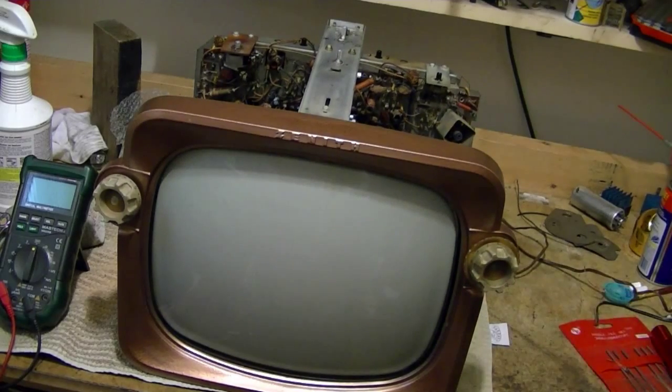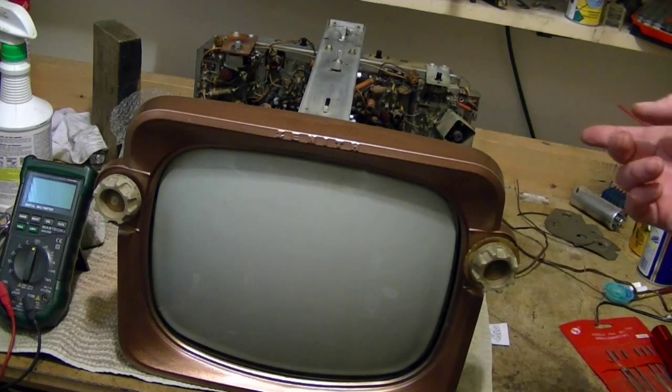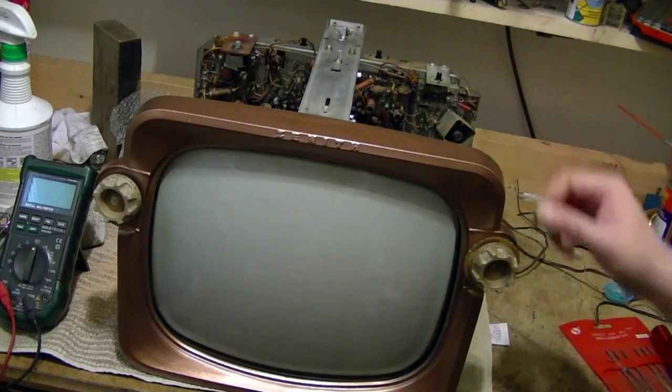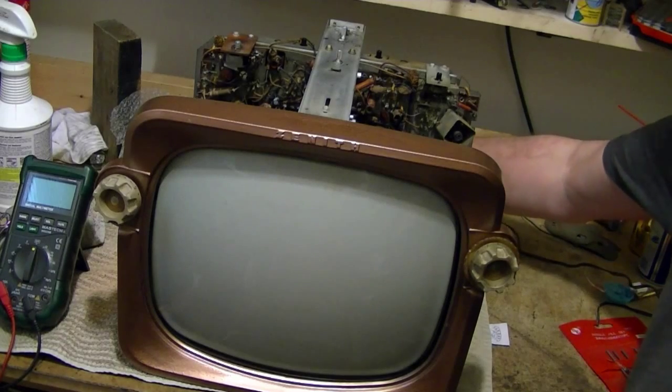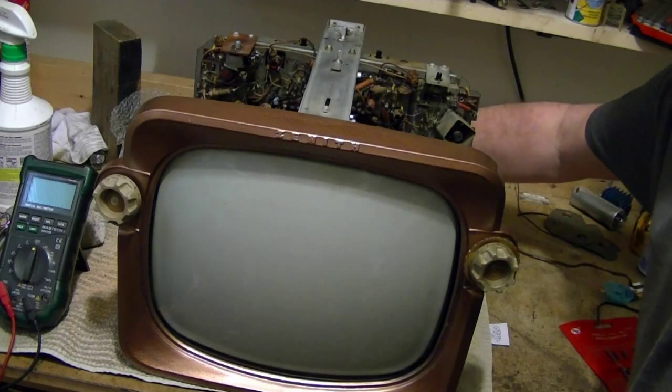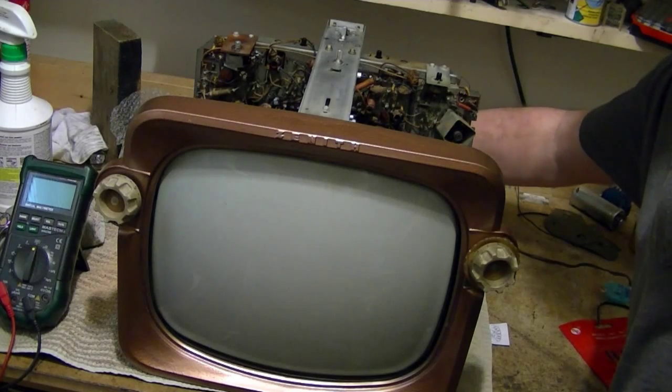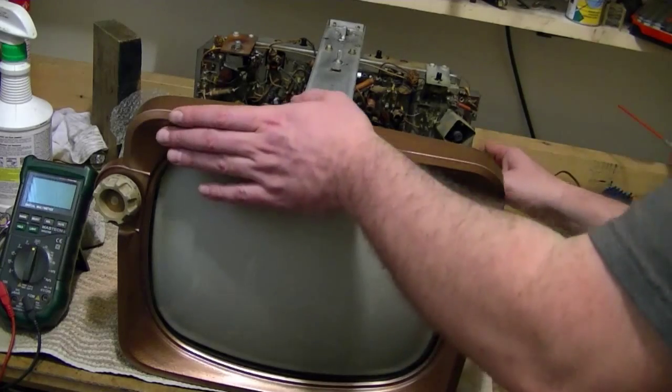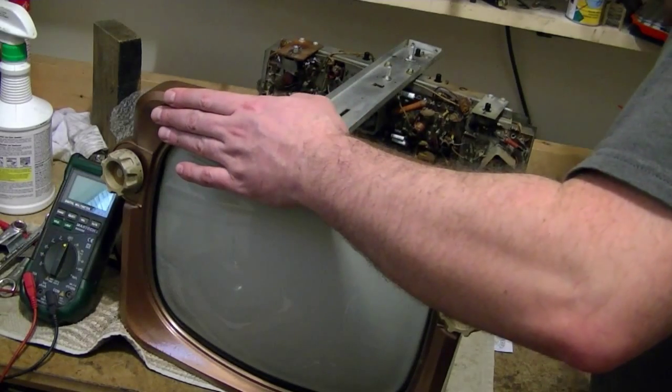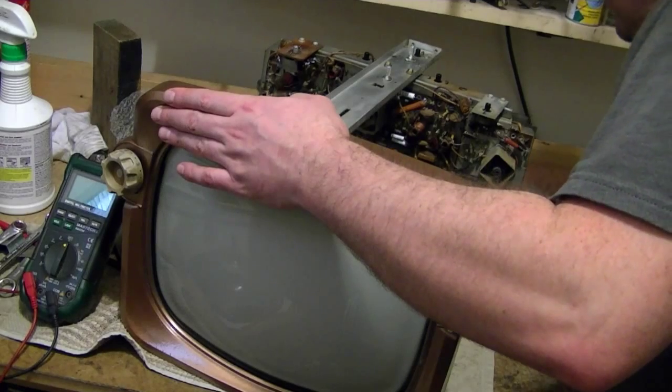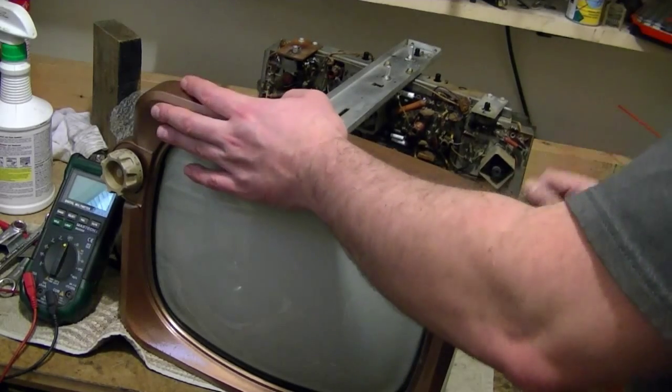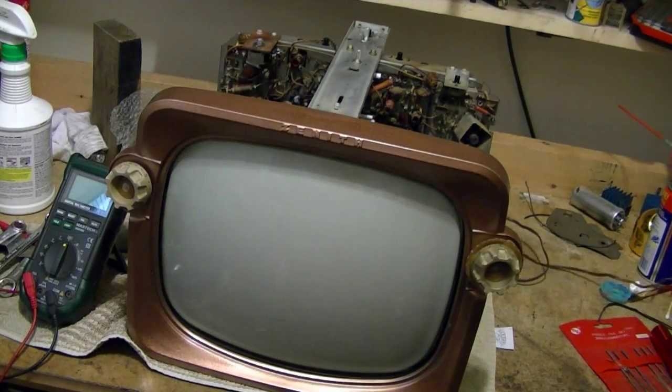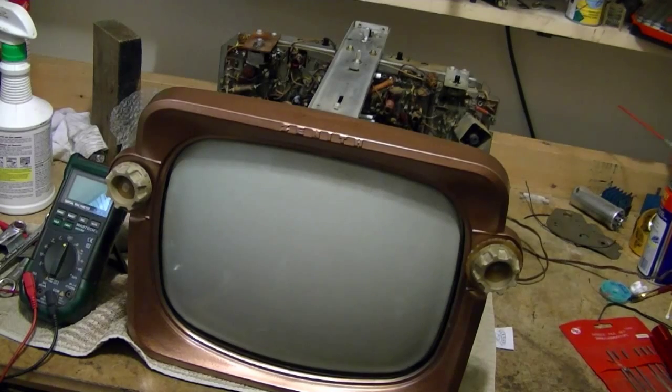Also, I noticed that the CRTs in the other two sets are electrostatically focused. There's a little metal strap that shorts the focus pin to one of two other pins on the CRT base. And this set doesn't have that. So I don't know, with the rebuilt CRT gun, maybe it doesn't need it or maybe it fell off. Assuming this does work, I wouldn't be surprised if the focus is off.